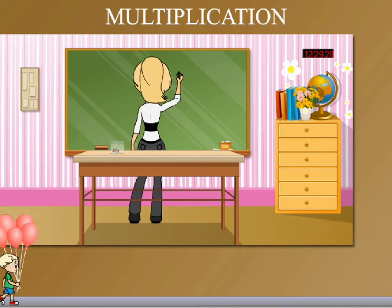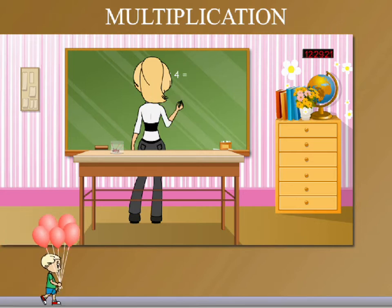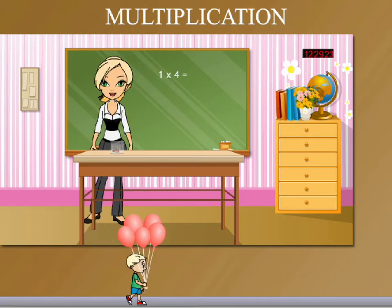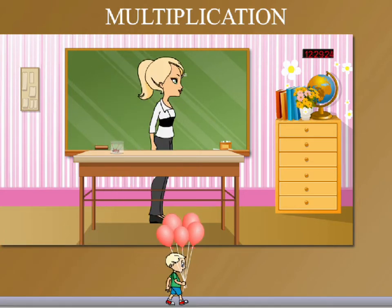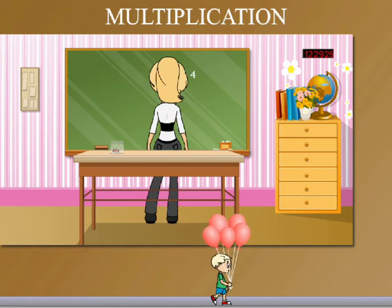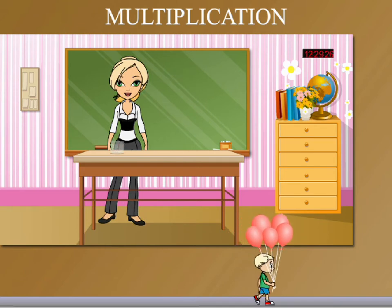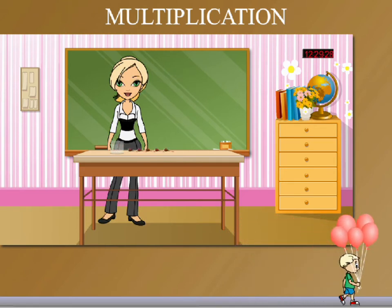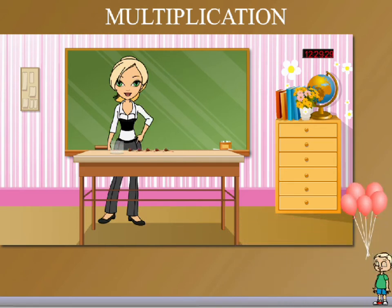She writes on the board '1 into 4', looks at the container, and writes '1 into 4 equal to 4'. She now has more lollipops and counts them.